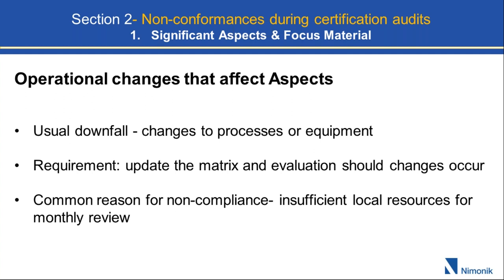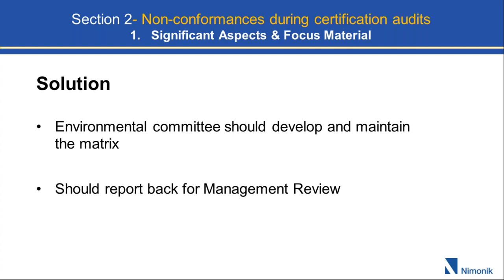The biggest issue is you don't have local resources to do these monthly reviews. One individual is probably dedicated to production management. The solution: don't build this matrix by yourself. You should have an environmental committee — even if it's just two people — to maintain this matrix. It also should be communicated to general employees: what are their significant aspects and concerns? When auditors walk in, I'll pull anybody off the line and ask what here is hazardous to you and what kind of controls are in place. This should be reported back to management review.